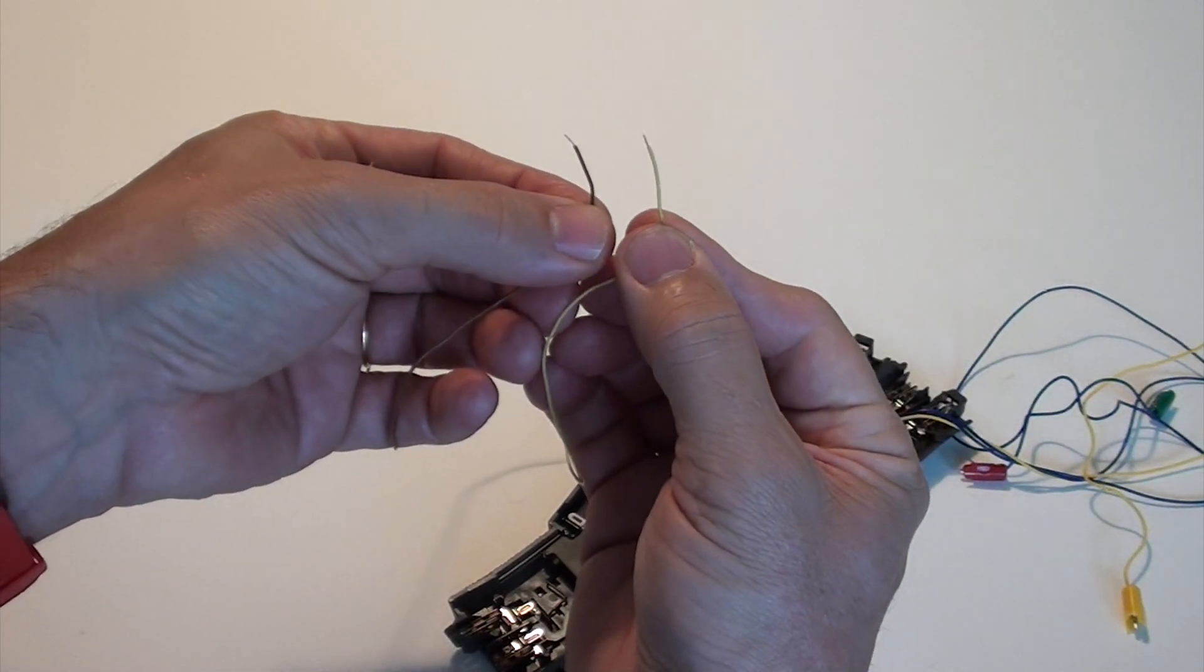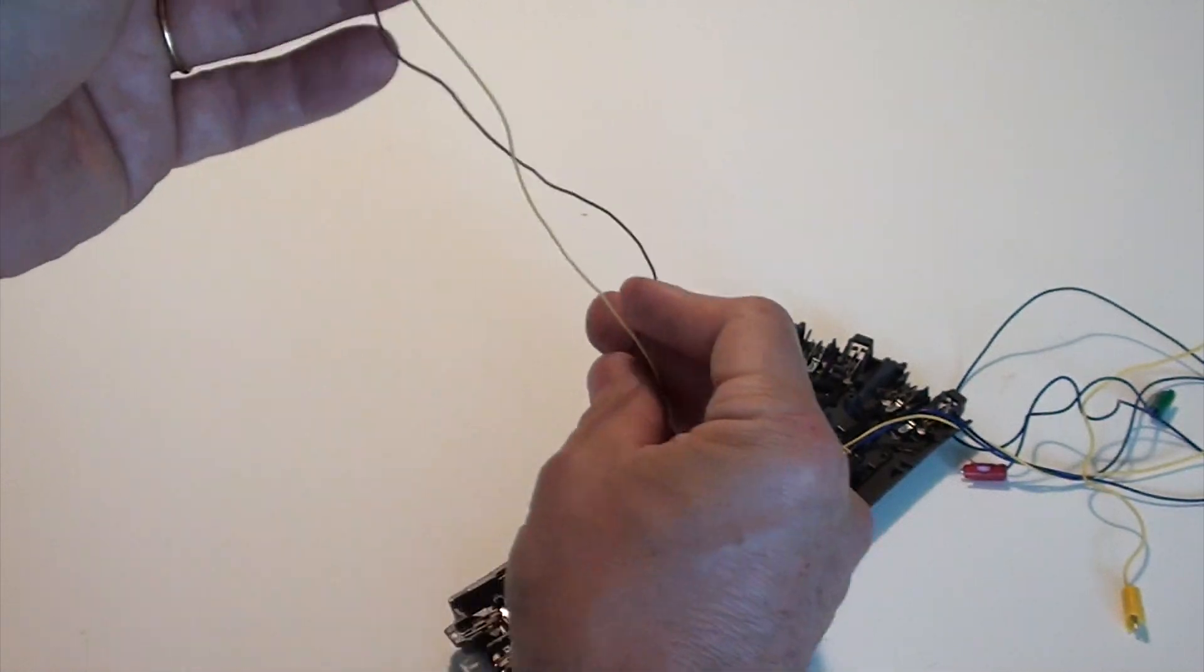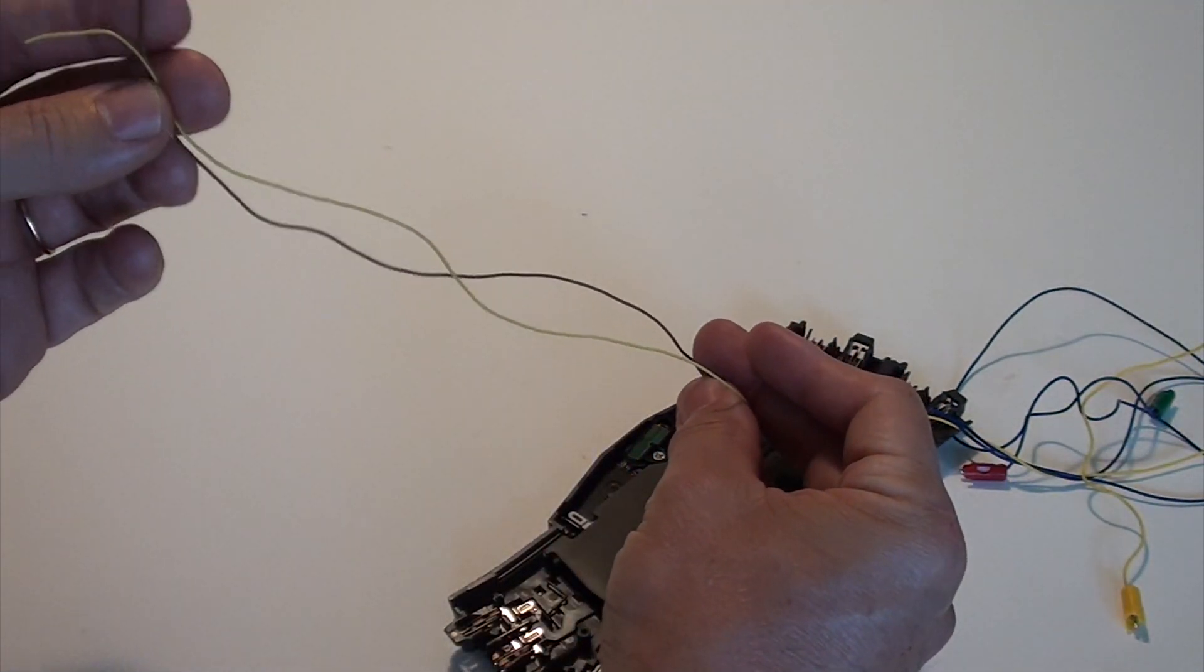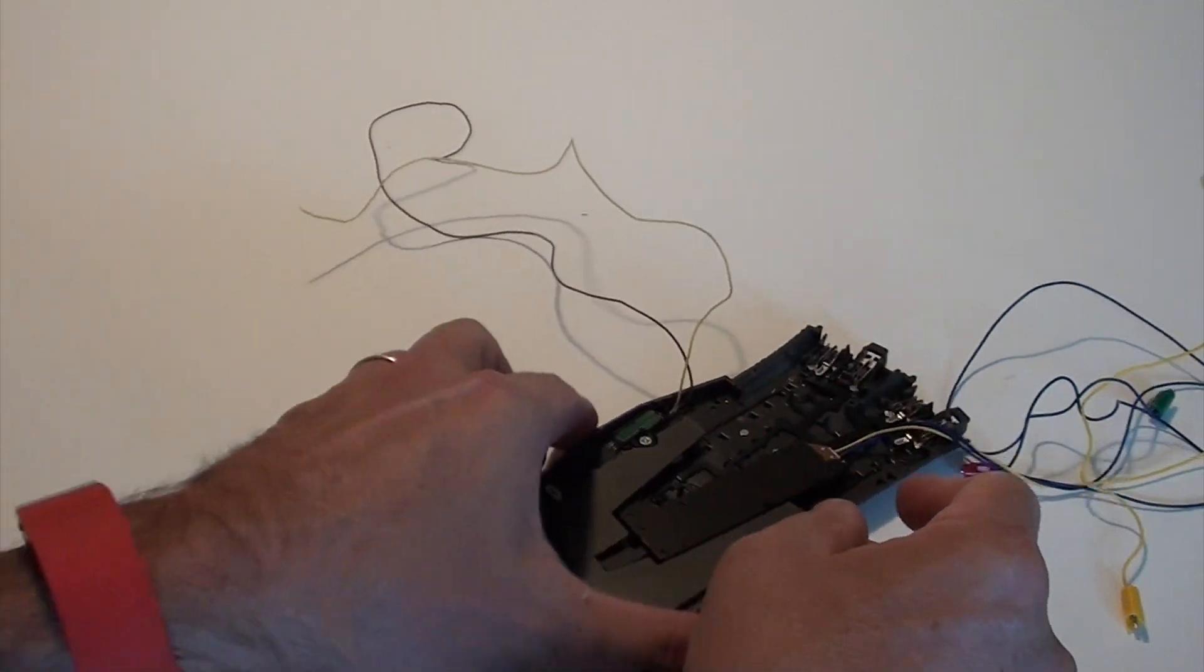It comes with the standard yellow and brown wires that Marklin uses for the lighting circuits. You can run these yellow and brown wires to your existing lighting circuit on your layout.